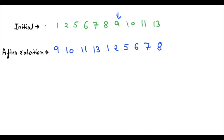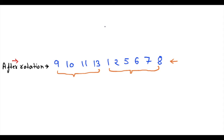Suppose this is the initial array before rotation, and this array is rotated about the element 9. The final array becomes this. If we observe this array, we can see that one part of the array is in increasing order, and the other part is also in increasing order. So we can easily separate this array into two parts using a dividing line.